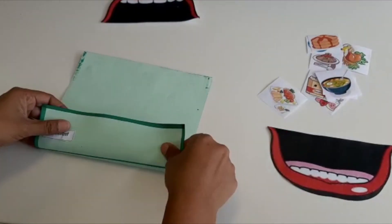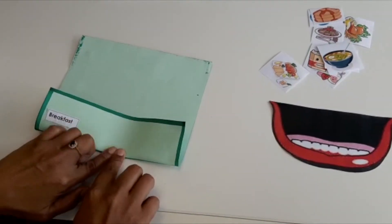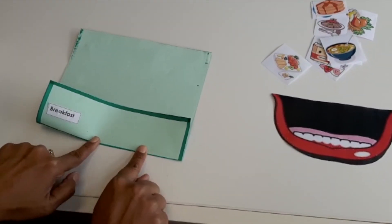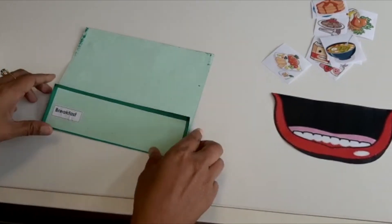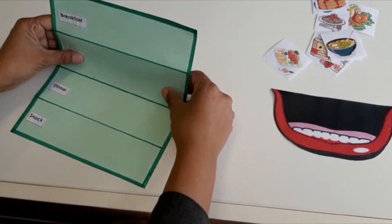Fold a piece of Bristol board or a piece of paper into four sections. One section will be for breakfast, next lunch, dinner and snack.